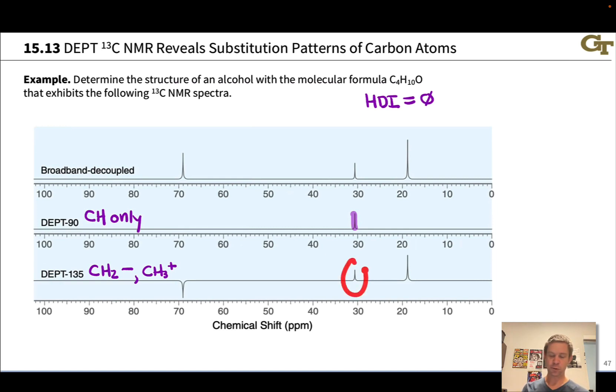In the DEPT-135, we already know that signal corresponds to a CH group, so this other positive signal must correspond to a CH3, and the negative signal must correspond to a CH2. We have identified all the substitution patterns of all three distinct sets of carbons in this compound. Just to review: negative in DEPT-135 is always a CH2. Positive in DEPT-90 is a CH. The remaining signal by default must be a CH3, since it's showing up positive in DEPT-135 as well. We have no quaternary carbons. Every carbon's got at least one hydrogen connected to it.